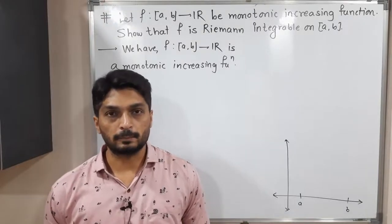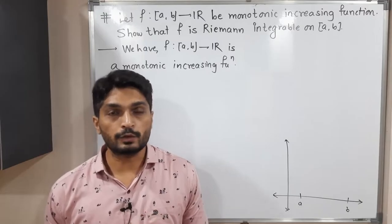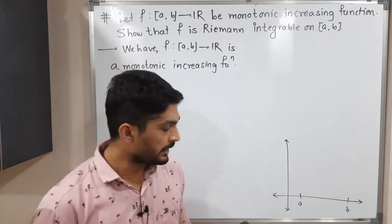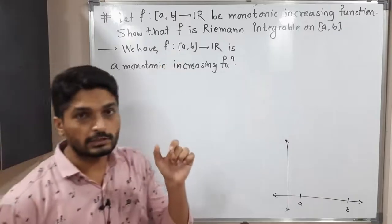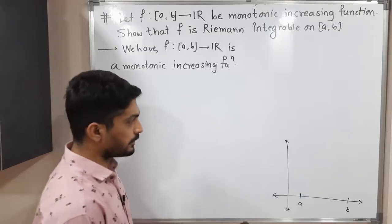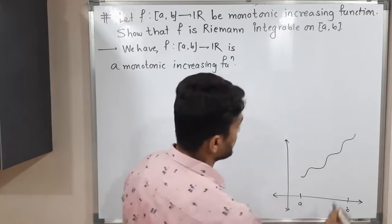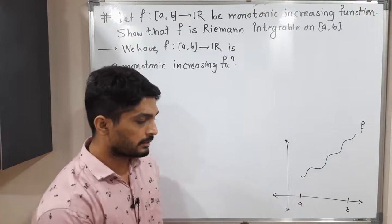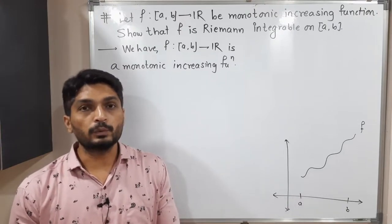Let us discuss this example — actually it is a result. When we have a monotonic increasing function, we have to prove that it is Riemann integrable. Given: function F defined on closed interval [a, b] to R is a monotonic increasing function. Let me draw the graph of the function — it will be like this. Note that the function need not be continuous; for simplicity I have drawn a continuous function here.